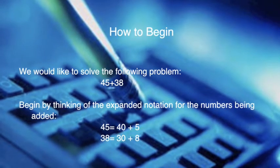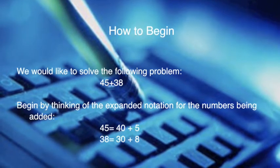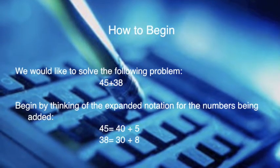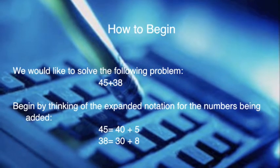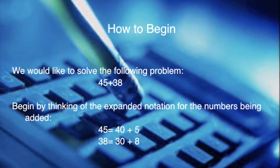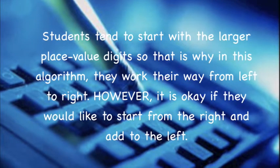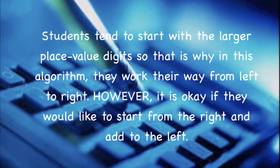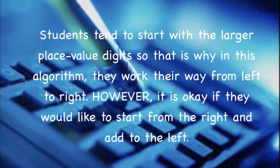We would love to solve the problem 45 plus 38. You need to begin by thinking of the expanded notation for the numbers being added: 45 equals 40 plus 5, and 38 equals 30 plus 8. Remember — students tend to start with the larger place value digits, so in this algorithm they work their way from left to right.